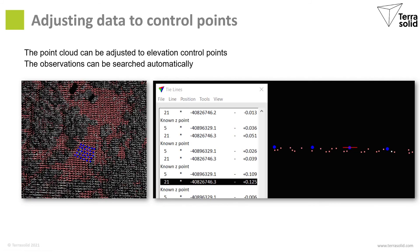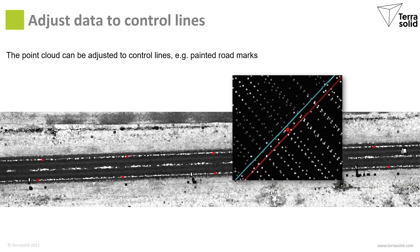For elevation control you can use points on flat ground — either scattered points over the area or groups of points at one spot. These observations can be collected automatically, and you can choose how to adjust your data to these control points. Instead of control points you can choose to measure control lines. This could be helpful for example for roads where you often have painted lines along the road, and these control lines can be used to fit the data in one direction along the road.